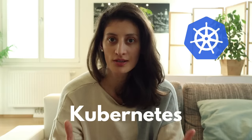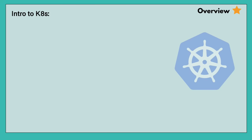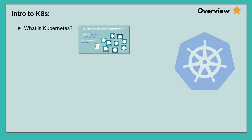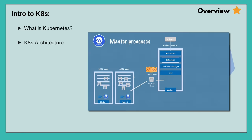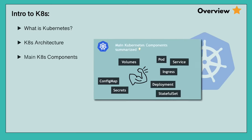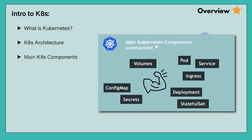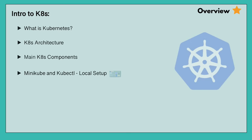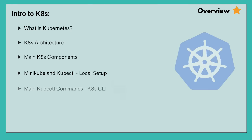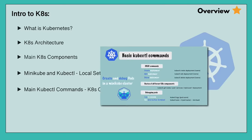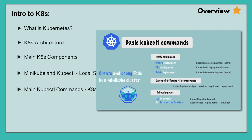Let's quickly go through the topics covered in this course. The first part gives you a great introduction to Kubernetes. We will start with the basic concepts of what Kubernetes actually is, what problems it solves, and the Kubernetes architecture. You will learn how to use Kubernetes by showcasing all the main components. After learning the main concepts, we will install Minikube for a local Kubernetes cluster and go through the main commands of creating, debugging and deleting pods using kubectl, which is the Kubernetes command line tool.